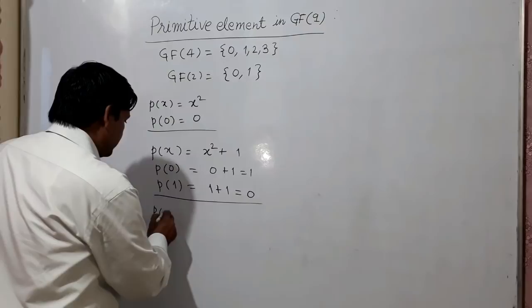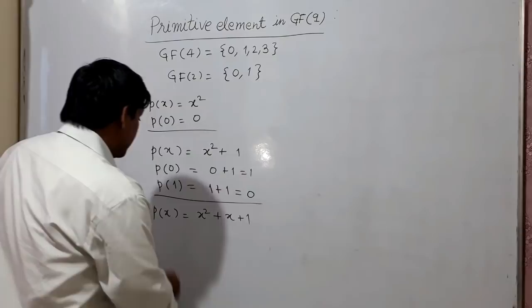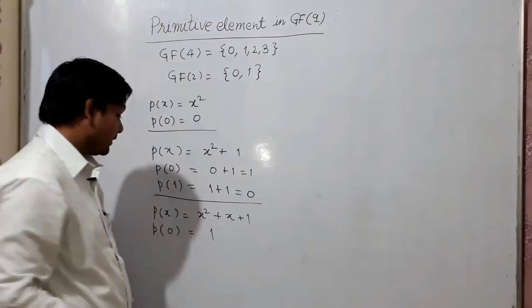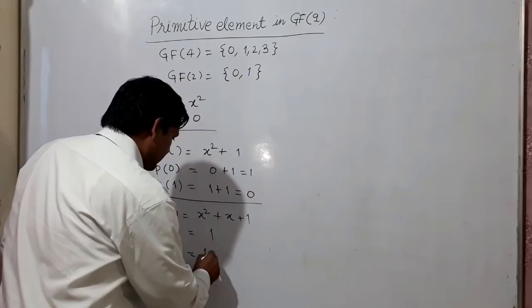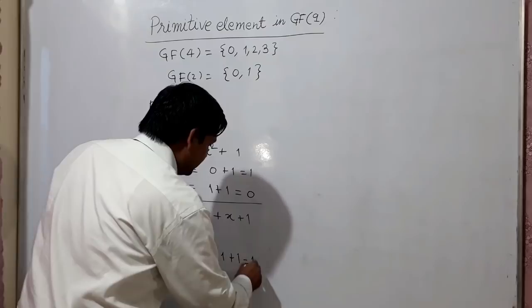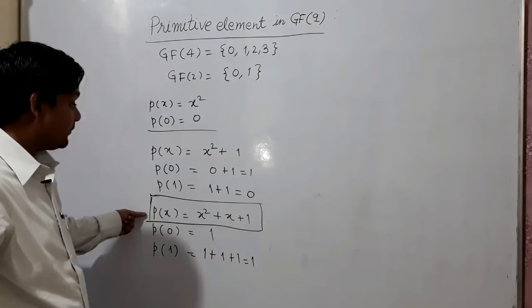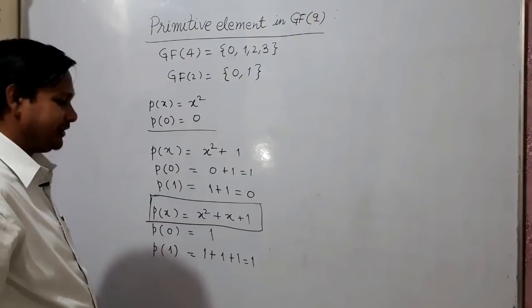I take P(x) = x² + x + 1. For x = 0: 0 + 0 + 1 = 1, not 0. For x = 1: 1 + 1 + 1 = 3, and 3 mod 2 = 1, not 0. This means x² + x + 1 has no roots, so this is the primitive polynomial. I will extend GF2 to GF4 using this as the generator polynomial.